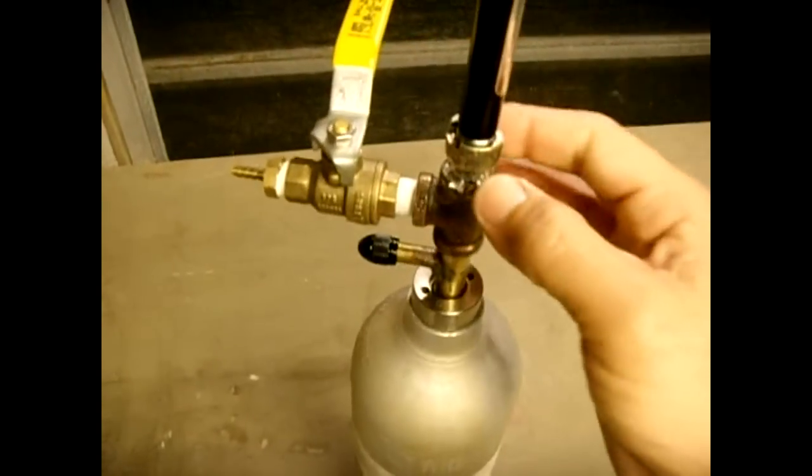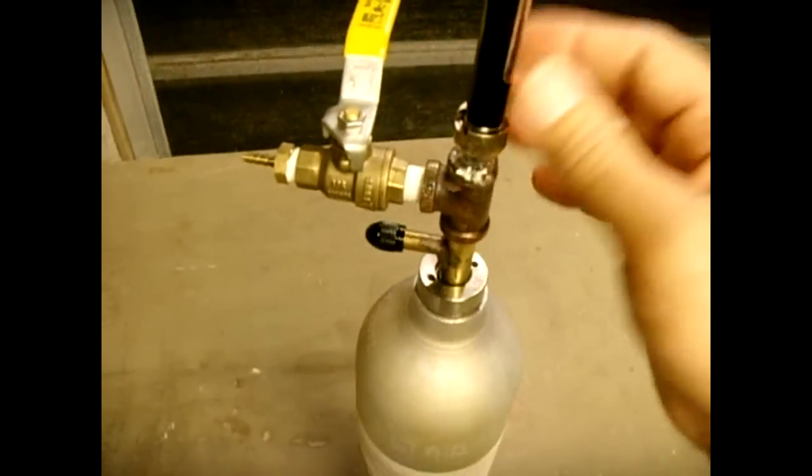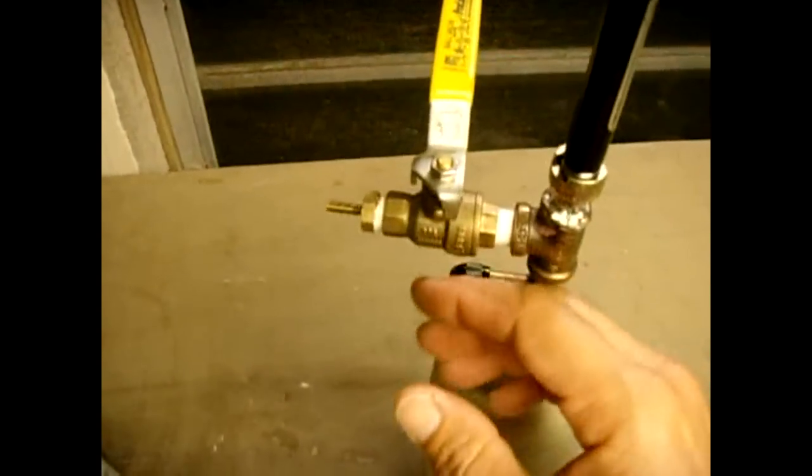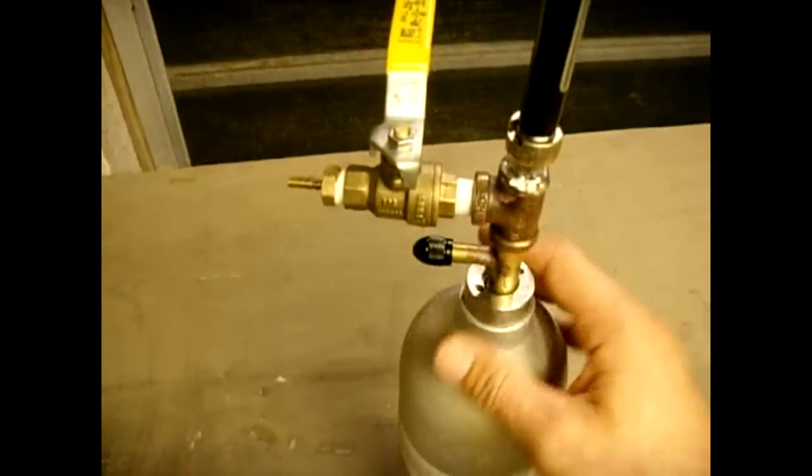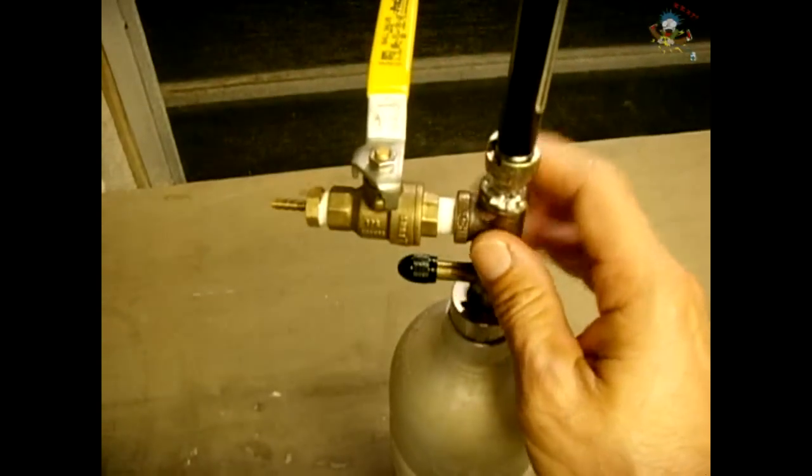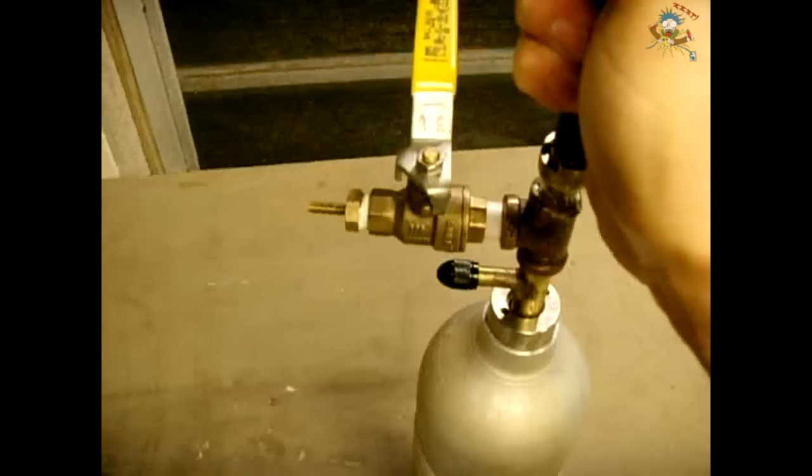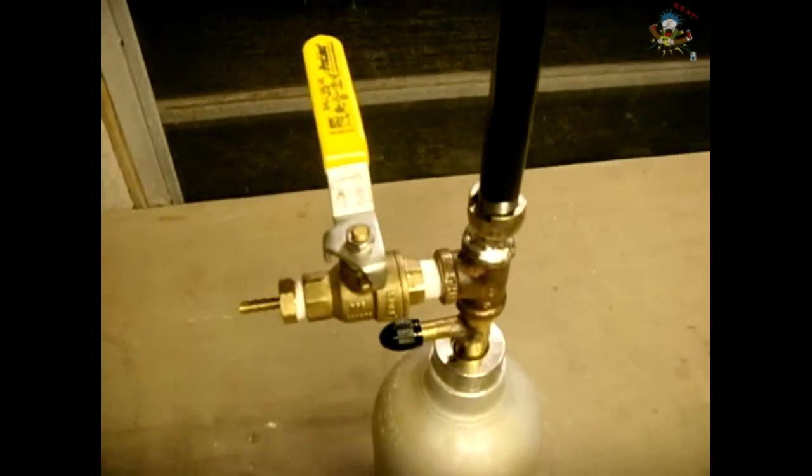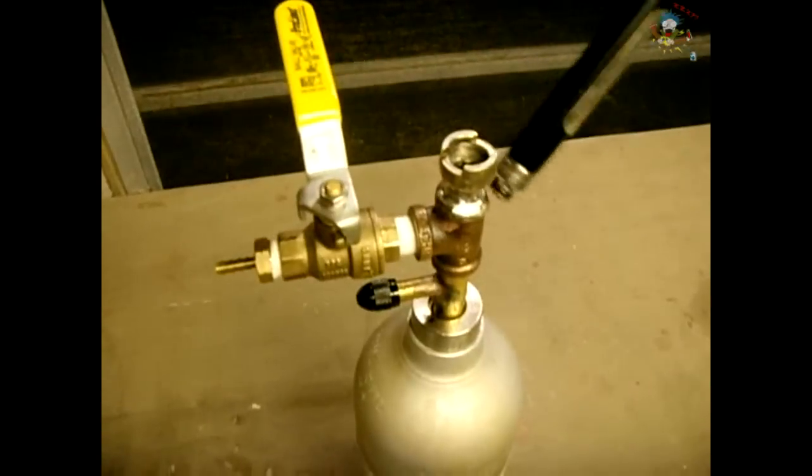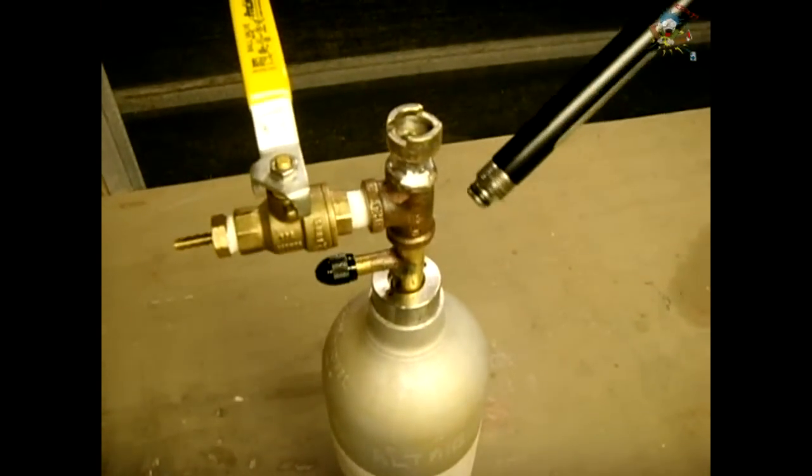Once I brazed this together all the way around, then I reinstalled the spring, the ball, and the rubber seal inside this fitting. If I would have left it in before, it would have all been torched. The ball valve I picked up at a hardware store. The brass pipe fittings are all thick-walled yellow brass. You can see the seal, the o-ring seal on here.